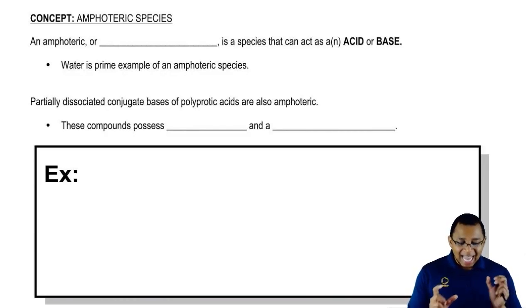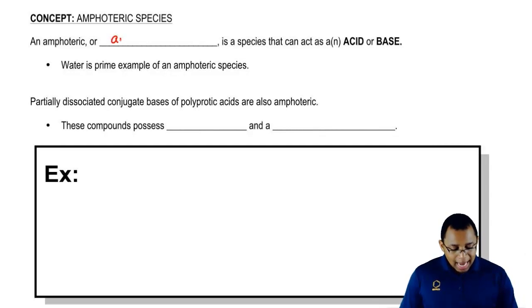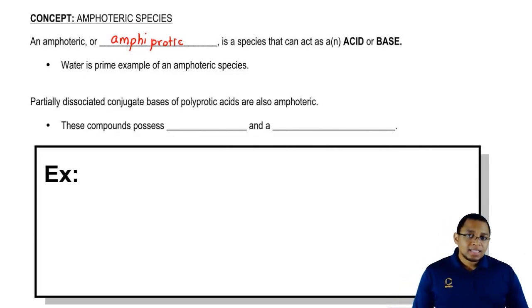They act as acids and as bases. Here we're going to say an amphoteric species or an amphiprotic species is a compound that can act as an acid or as a base.